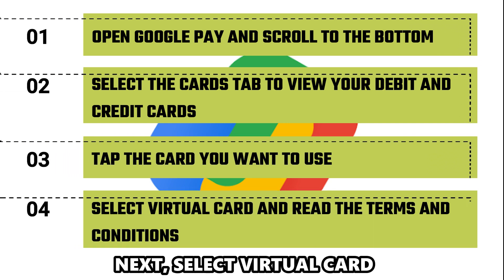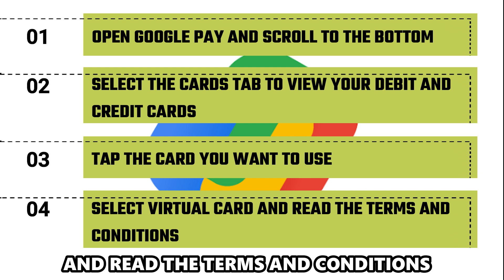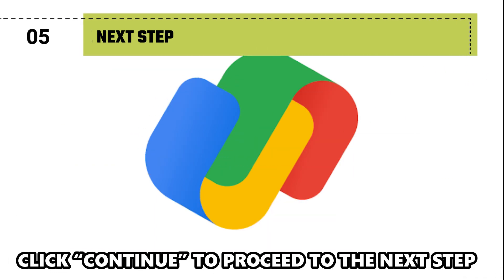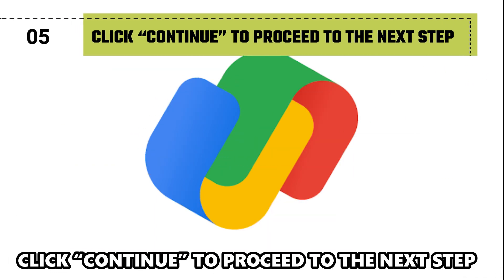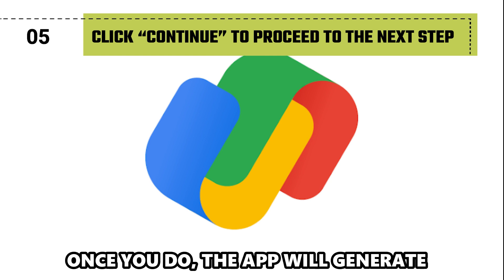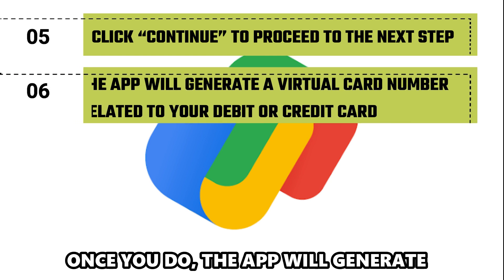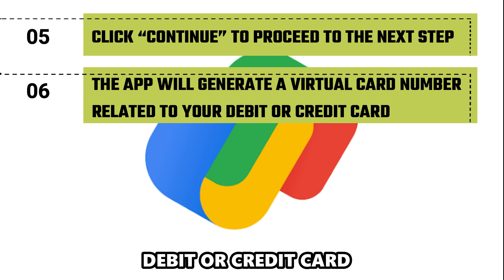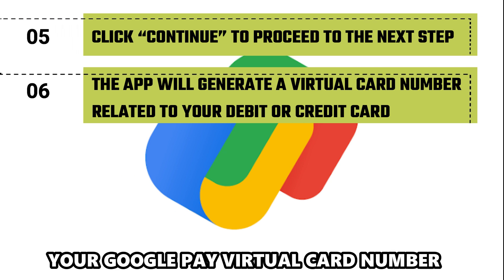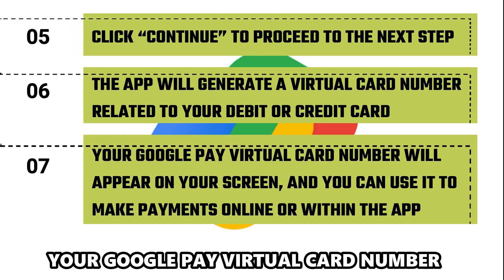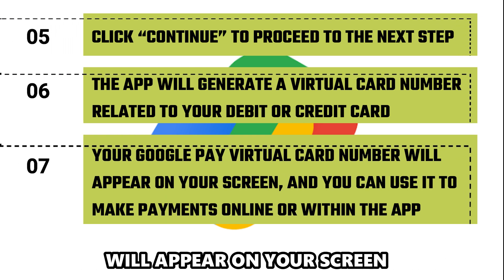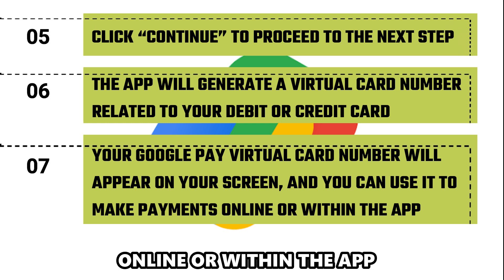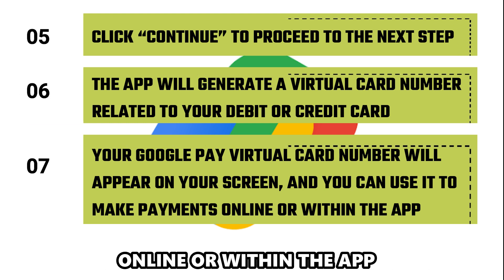Next, select Virtual Card and read the terms and conditions. Click Continue to proceed. The app will generate a virtual card number related to your debit or credit card, which will appear on your screen. You can use it to make payments online or within the app.